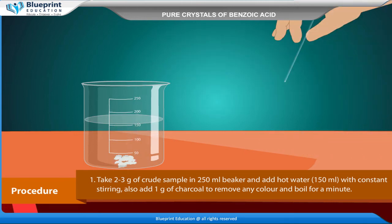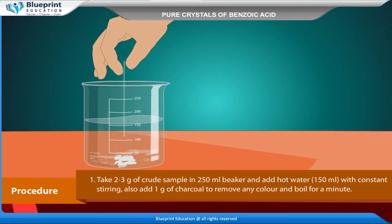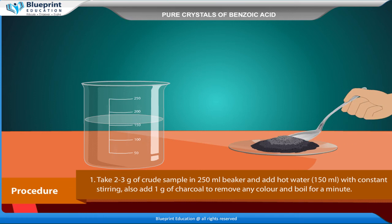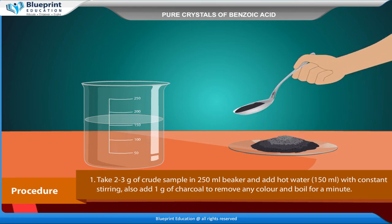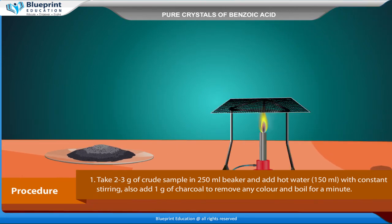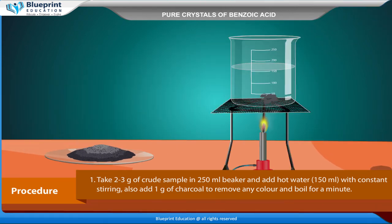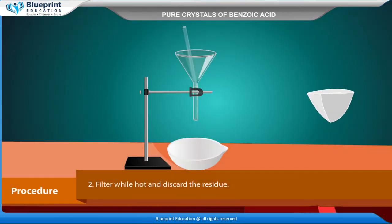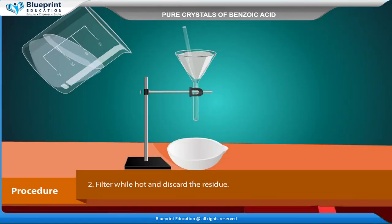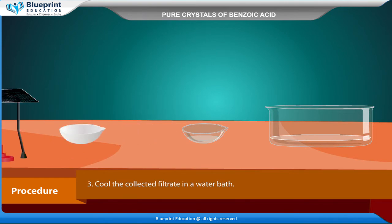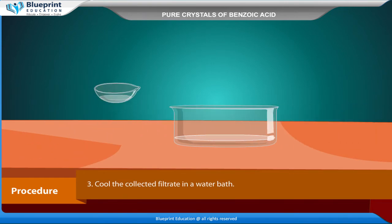Procedure: Take 2-3 grams of crude sample in a 250 ml beaker and add 150 ml of hot water with constant stirring. Also add 1 gram of charcoal to remove any color and boil for a minute. Filter while hot and discard the residue.